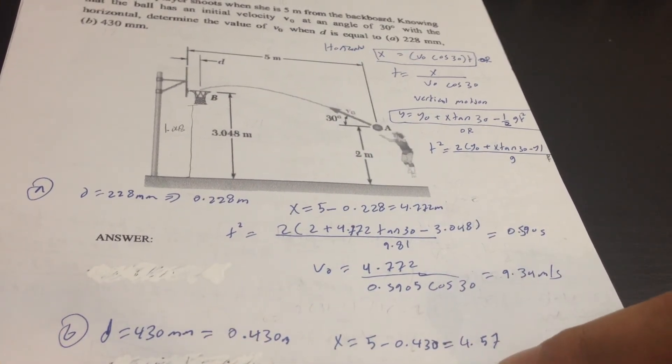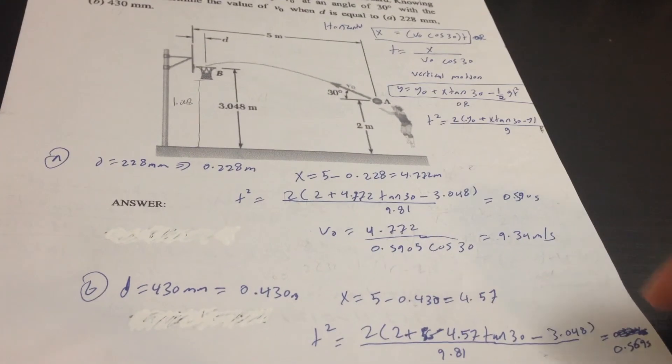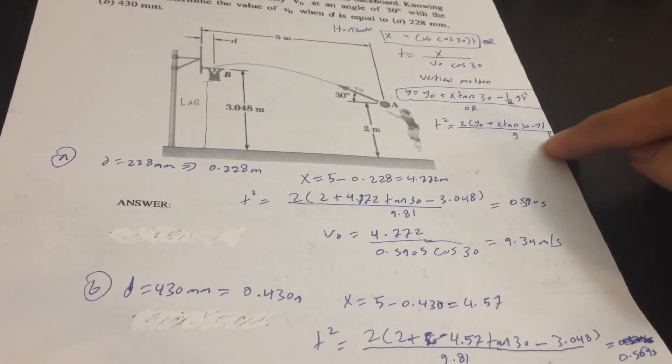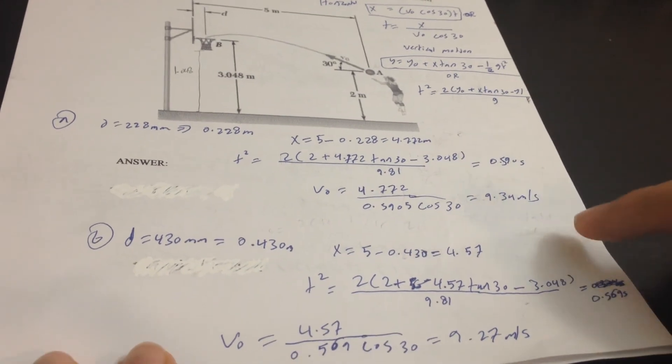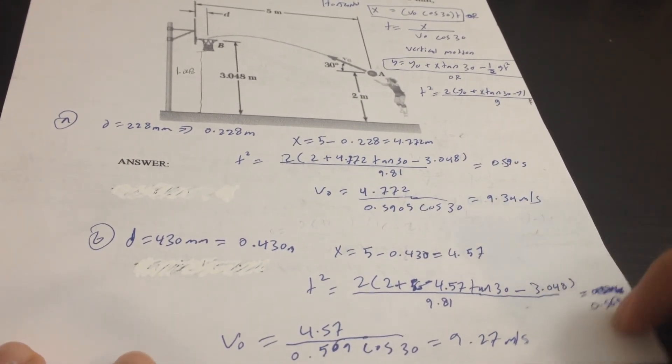And we have to use the same equation, and we will have the value. The unknown is V0.